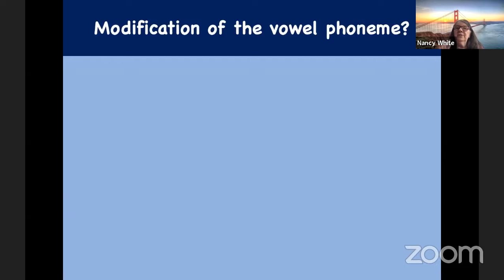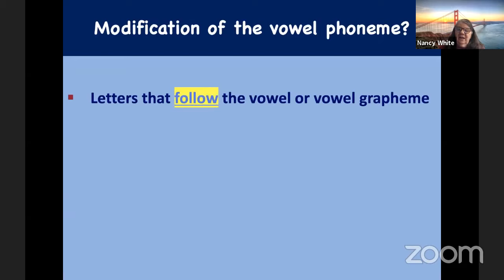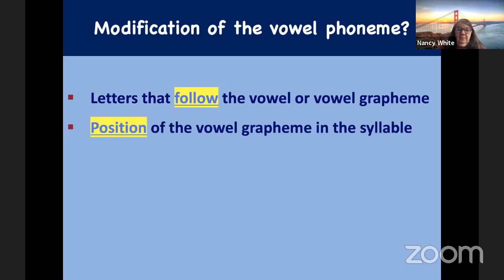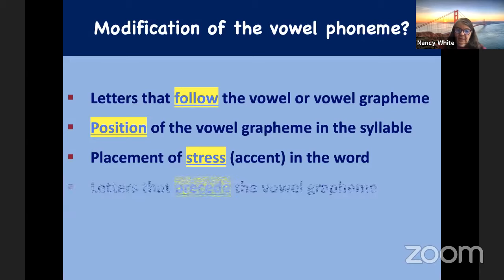What tells you what the associated sound of a vowel grapheme is going to be? Letters that follow the vowel — in a closed syllable it's vowel-consonant, or it could be a vowel team. It could be vowel-R. The position of the vowel grapheme in the syllable matters: if there's a single vowel at the end of a syllable, that's an open syllable. If you have vowel-consonant-silent E, that whole spelling must be at the end of the base word for the E to be silent. The placement of stress in the word also matters, and sometimes letters that precede the vowel — when W comes before A, the vowel isn't pronounced as expected: 'water,' not 'waiter'; 'wash,' not 'wash' with a long A.